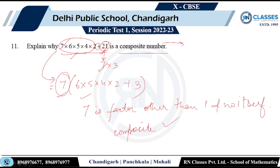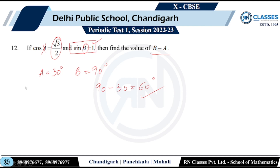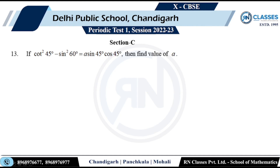Question 13: Given cos A = √3/2 and sin B = 1, find B − C. Cos 30° = √3/2, so A = 30°. Sin 90° = 1, so B = 90°. Therefore B − C = 90° − 30° = 60°.